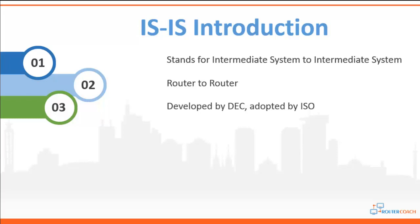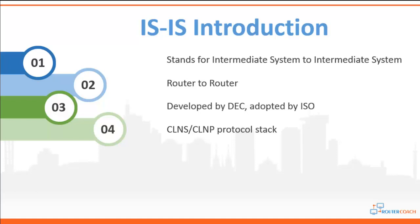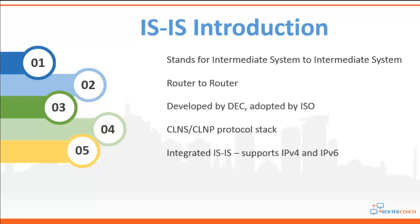ISO were developing a link state protocol for the CLNS/CLNMP protocol stack, which is the equivalent of IP — but they weren't actually developing it for IP. At that time, IP was thought of as more of an interim solution, and the OSI protocol stack was expected to take over. The IETF also thought a link state protocol was a good idea: one section went on to develop OSPF, and another started working on IS-IS, making extensions for IP. When they finished, this was called Integrated IS-IS, which is the IS-IS we use nowadays.